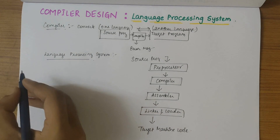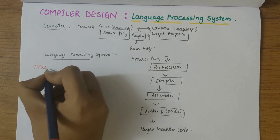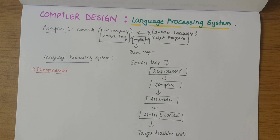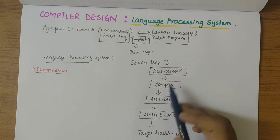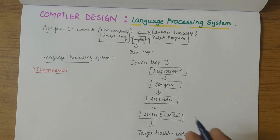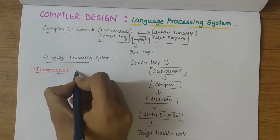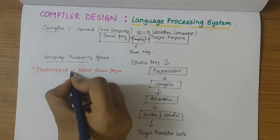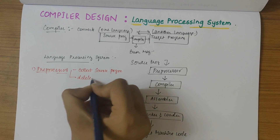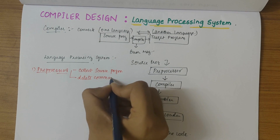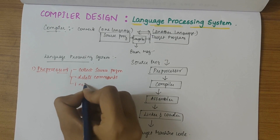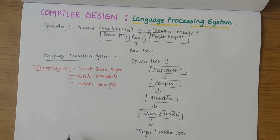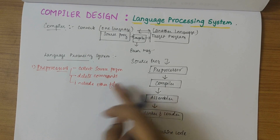Let's understand all these parts one by one. First, we have the preprocessor. The preprocessor is a separate program that is called by the compiler before the actual compilation process starts. The main task of the preprocessor is to collect the source program, delete comments, and include other files which are required.